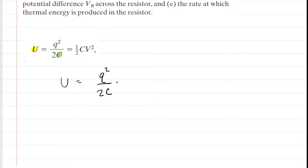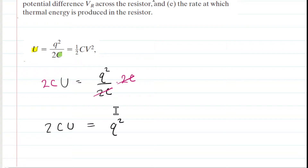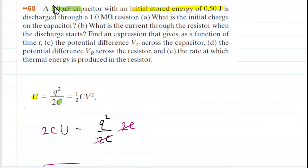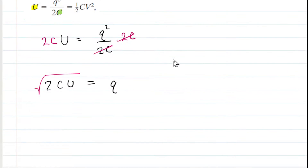We multiply both sides of the equation by 2 times the capacitance to cancel it on the right-hand side, then take the square root of both sides to isolate Q. Now we plug in the known values. The capacitance was in microfarads, so we multiply by 10 to the minus 6. The initial stored potential energy was 0.5 joules.